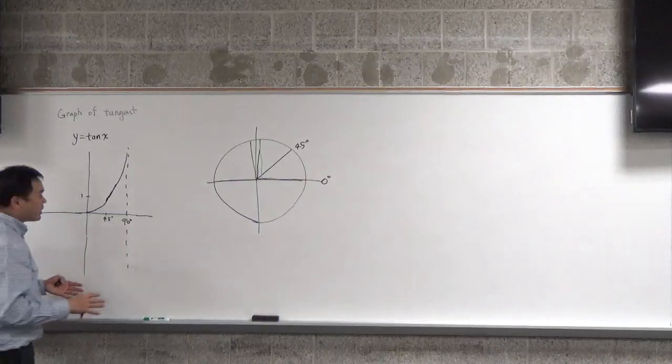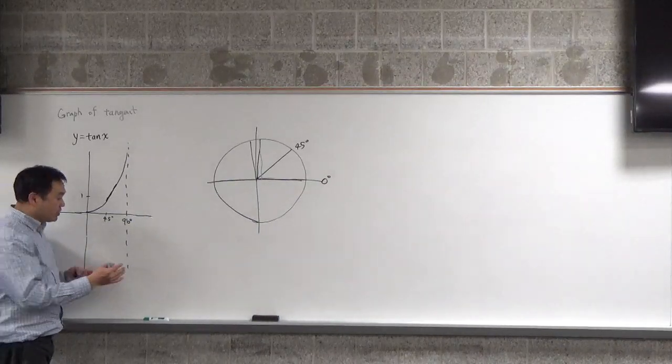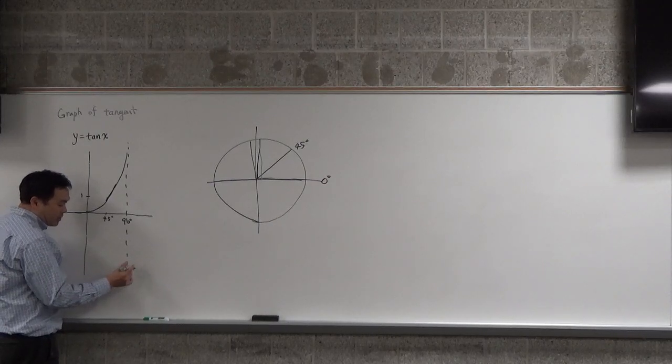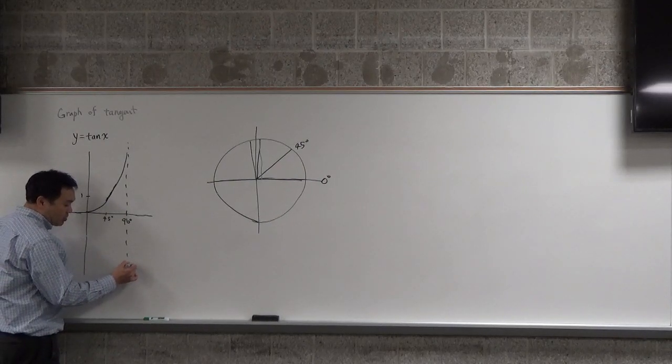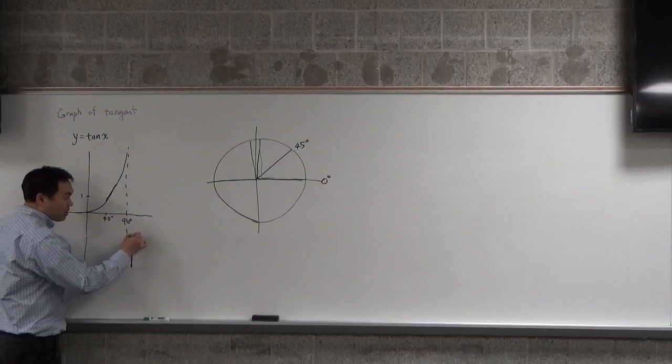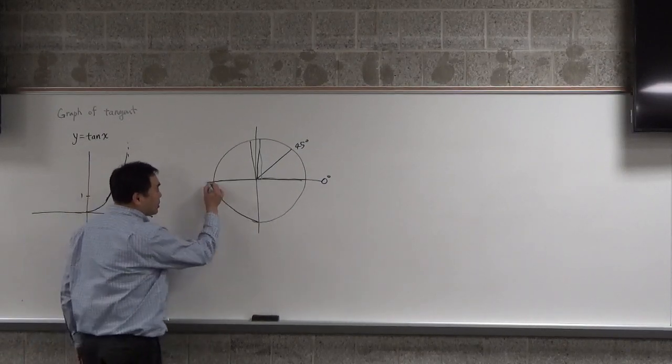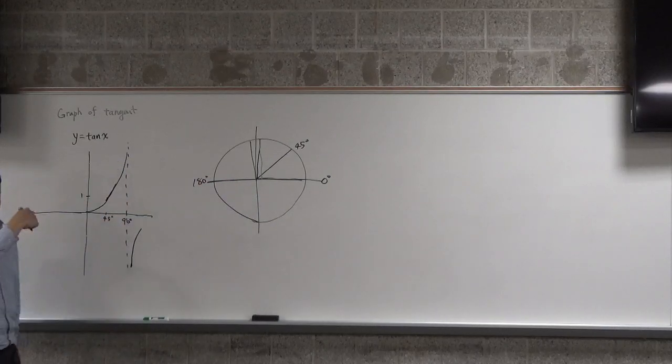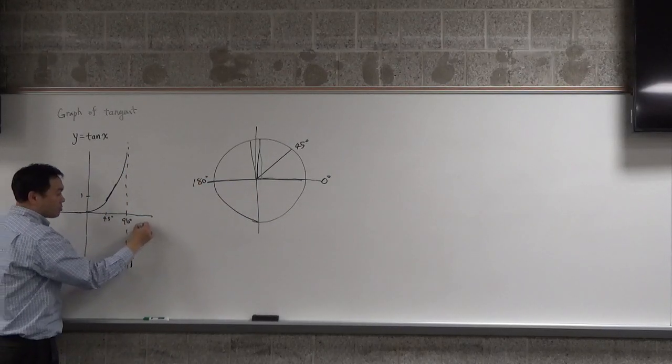So in that case, once you're over 90 degrees, when you're right past 90 degrees, the values are big negative values and you climb back up, and when you're hitting 180 degrees, you're back to zero again, because that's a zero slope.